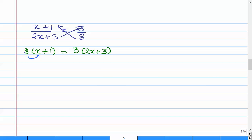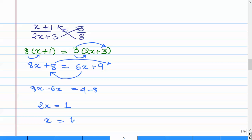Multiply 8 with x. So we have 8x, and then 8 times 1 is 8. Then we multiply 3 by 2x, and we also multiply 3 by 3. So 3 times 2 is 6x plus 3 times 3 is 9. Now we put the variables from the right-hand side to the left-hand side, and the constants from the left-hand side to the right-hand side. We transpose, so we have 8x minus 6x, and on this side, we have 9 minus 8. So we have 2x equals 1. Dividing both sides by 2, we get x equals 1 by 2.